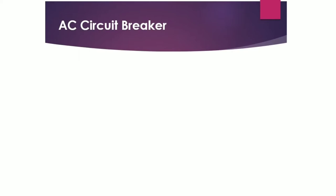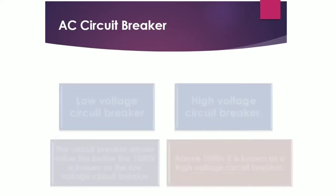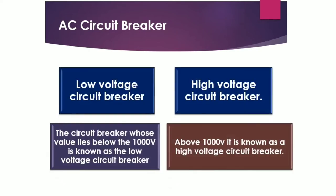For AC circuit breakers there are two types: low voltage circuit breaker and high voltage circuit breaker. The low voltage circuit breaker handles voltage below one thousand volts, while voltages above one thousand volts fall under the high voltage circuit breaker category.